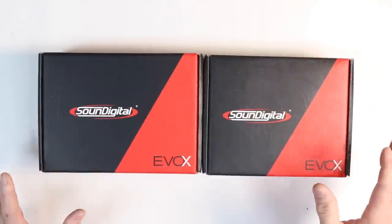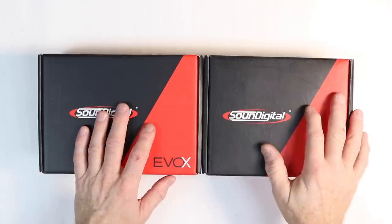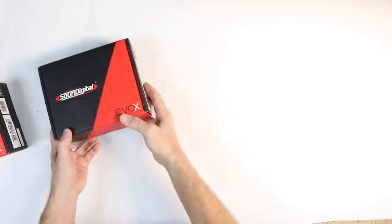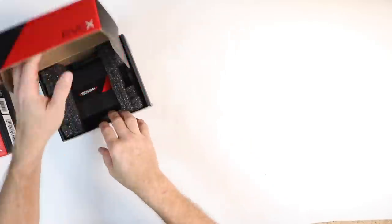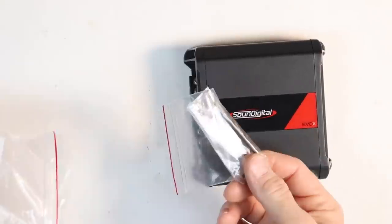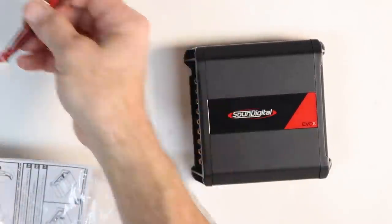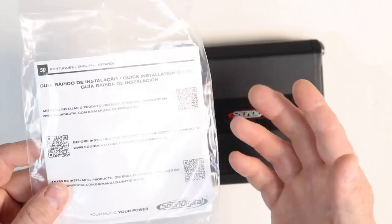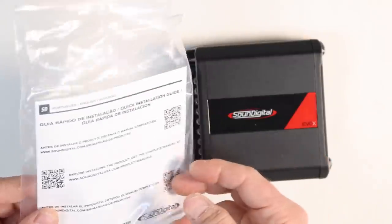And those two products are the Sound Digital Evo X 404 and 801. Let's start with the 404 and open it up and see what comes in the box. Along with the amplifier you get a sound digital sticker, an allen key, two high level plugs, the quick start guide and for the full installation guide you can scan the QR code here on the back. It'll take you off to the website where you can download it.